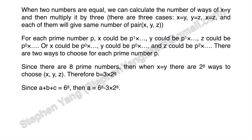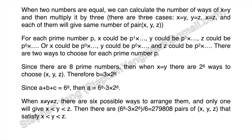Since a plus b plus c equals 6 to the 8th power and c equals 0, we get a equals 6 to the 8th power minus 3 times 2 to the 8th power. When all three numbers are distinct, there are 6 possible orderings and only one gives x less than y less than z. Therefore n equals (6 to the 8th power minus 3 times 2 to the 8th power) divided by 6, which equals 279,808. The remainder when divided by 100 is 8 — answer C.